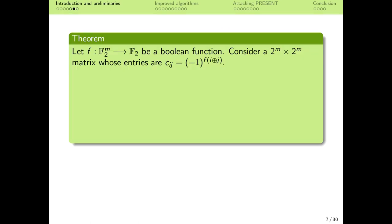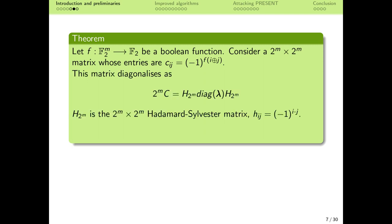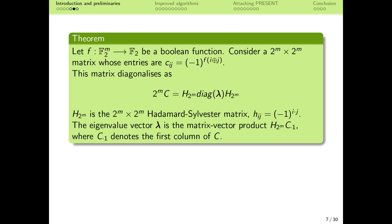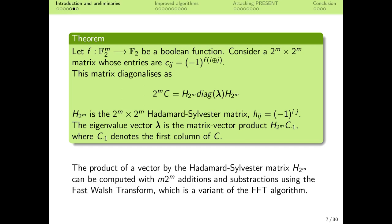Additionally, the matrix C has a specific structure: each of its entries is minus 1 to the power of a boolean function of the XOR of the row and column number. This type of matrix diagonalizes in such a way that the change of basis matrices are the Hadamard-Sylvester matrix. Furthermore, the eigenvalue vector can be obtained by multiplying the first column of C by this matrix. The product of a vector by the Hadamard-Sylvester matrix is what is usually called the Walsh transform, for which there is a fast algorithm analogous to the FFT, with time complexity O(m · 2^m).